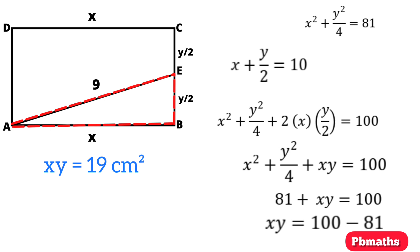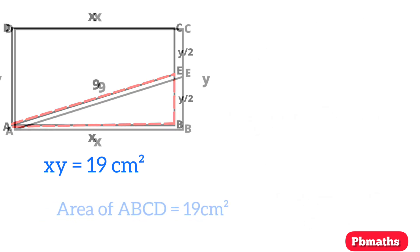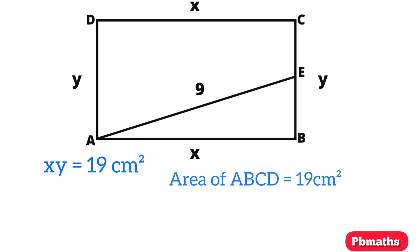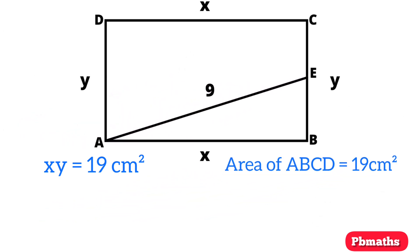We considered the side lengths of that rectangle as X and Y. We know that the area of rectangle equals length into breadth. So, area of rectangle ABCD equals X into Y equals 19 cm square. That is the answer.